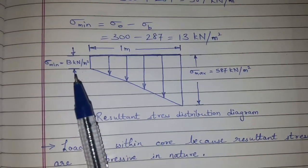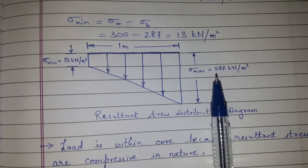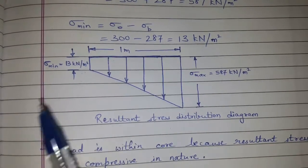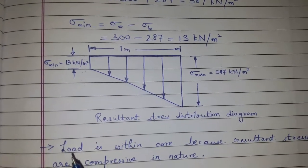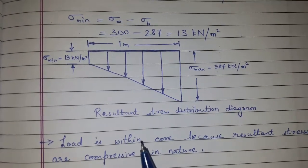So here we have 13 and here we have 587. So the resultant stress is compressive and not tensile. That's why we can say load is within the core.